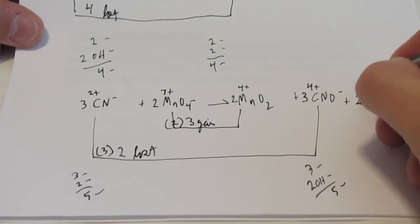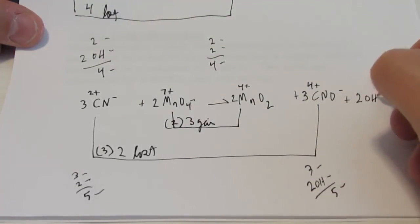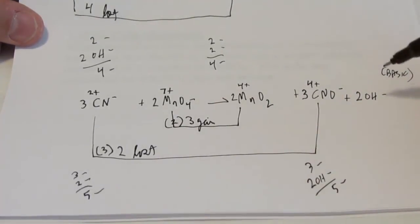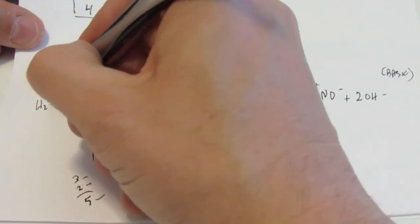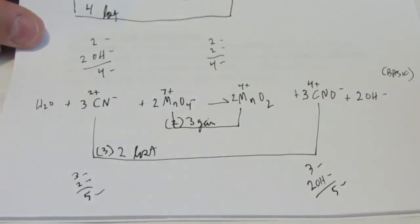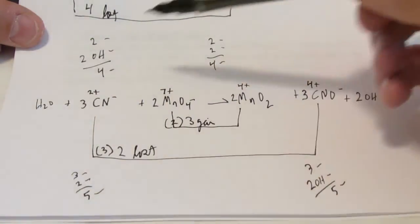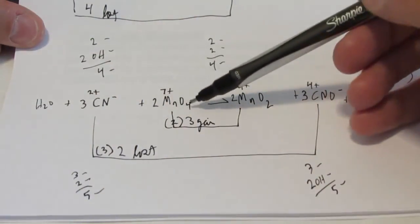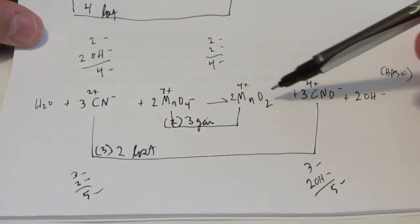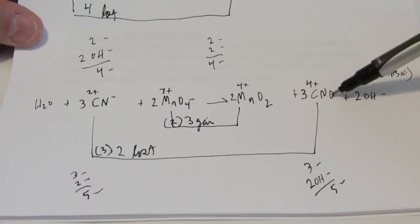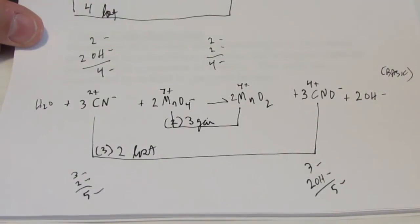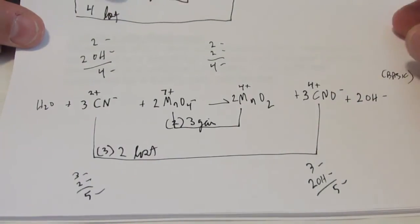We'll balance hydrogens using water — add a water to that side. Check our oxygens: one oxygen plus eight is nine on the reactant side. Four plus three is seven, plus two more is nine on the product side. It balances!